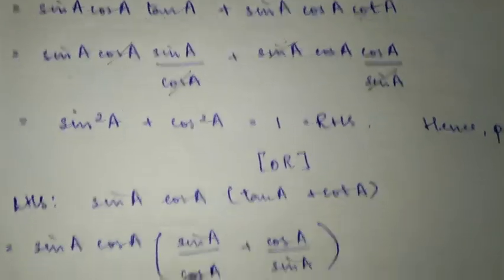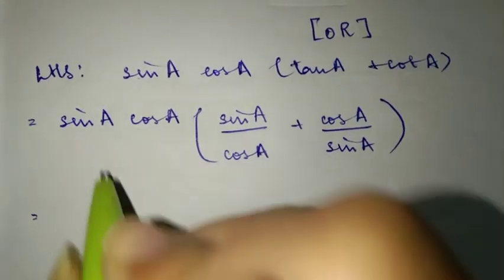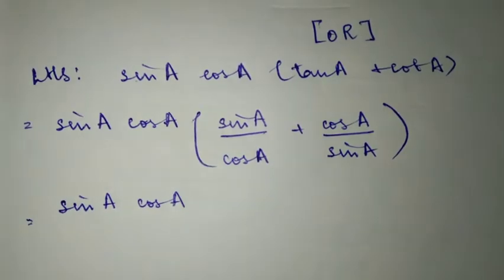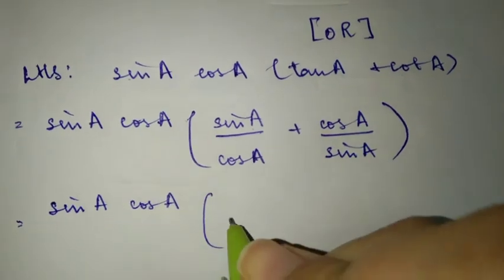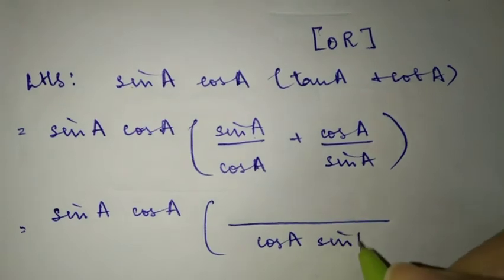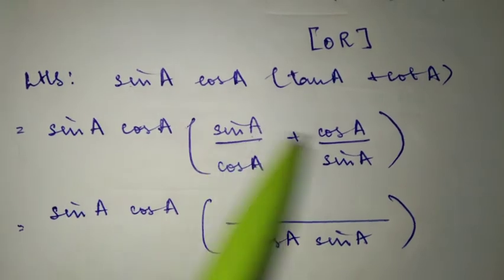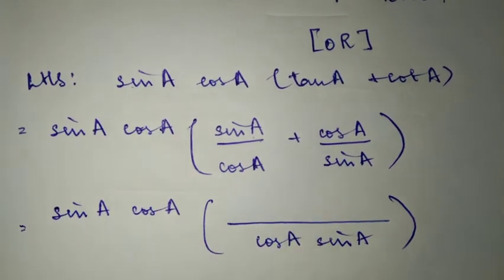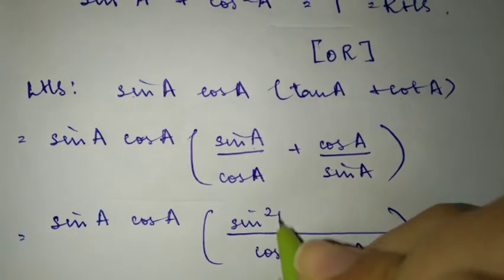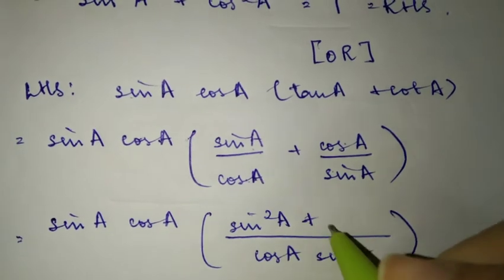We find the LCM for the two terms inside the bracket. The LCM is cos A sin A. Multiplying gives sin into sin, which is sin square A, plus cos into cos, which is cos square A.